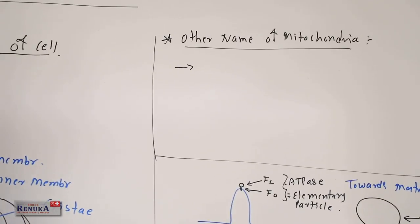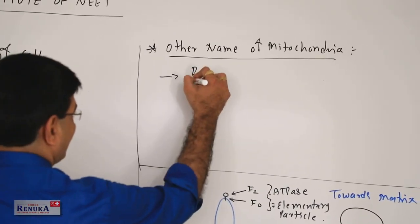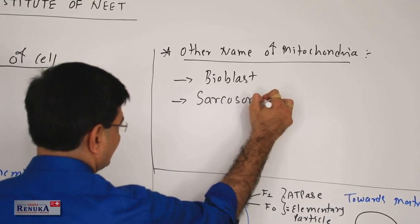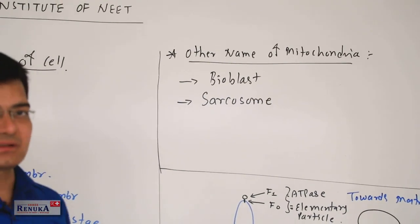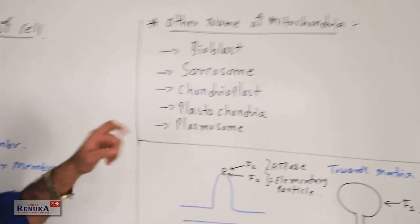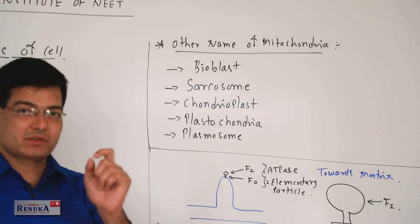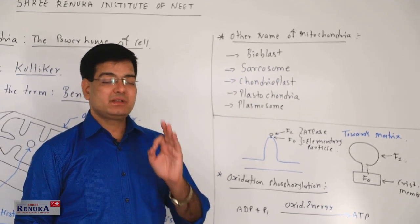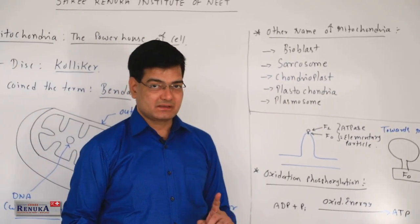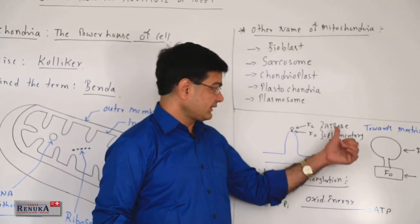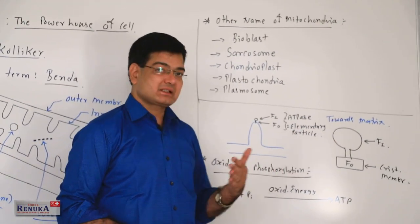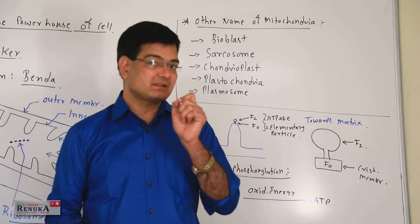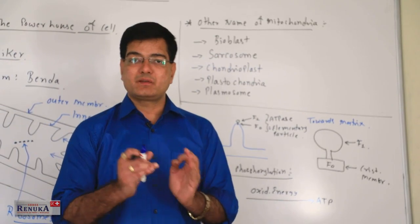Other names of mitochondria are bioblasts and sarkosome. In the case of muscles, mitochondria is called sarkosome — that word is specific to muscles. The elementary particles or ATPase discussed earlier are also called oxysome in some reference books. So oxysome is nothing but the F0 and F1 particle itself.